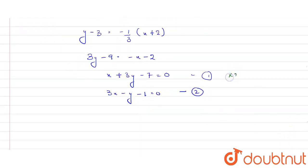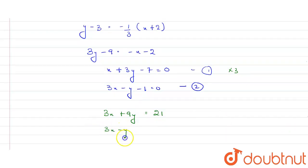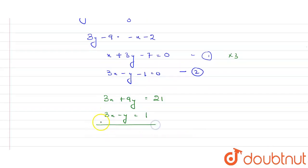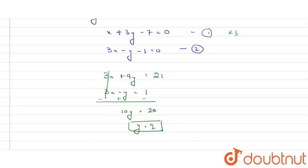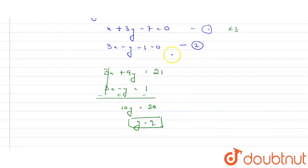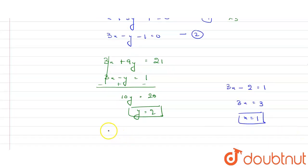Multiplying equation one by 3: 3x + 9y = 21. Equation two is 3x - y = 1. Subtracting: 10y = 20, so y = 2. Substituting y = 2 into equation two: 3x - 2 = 1, so 3x = 3, giving x = 1.